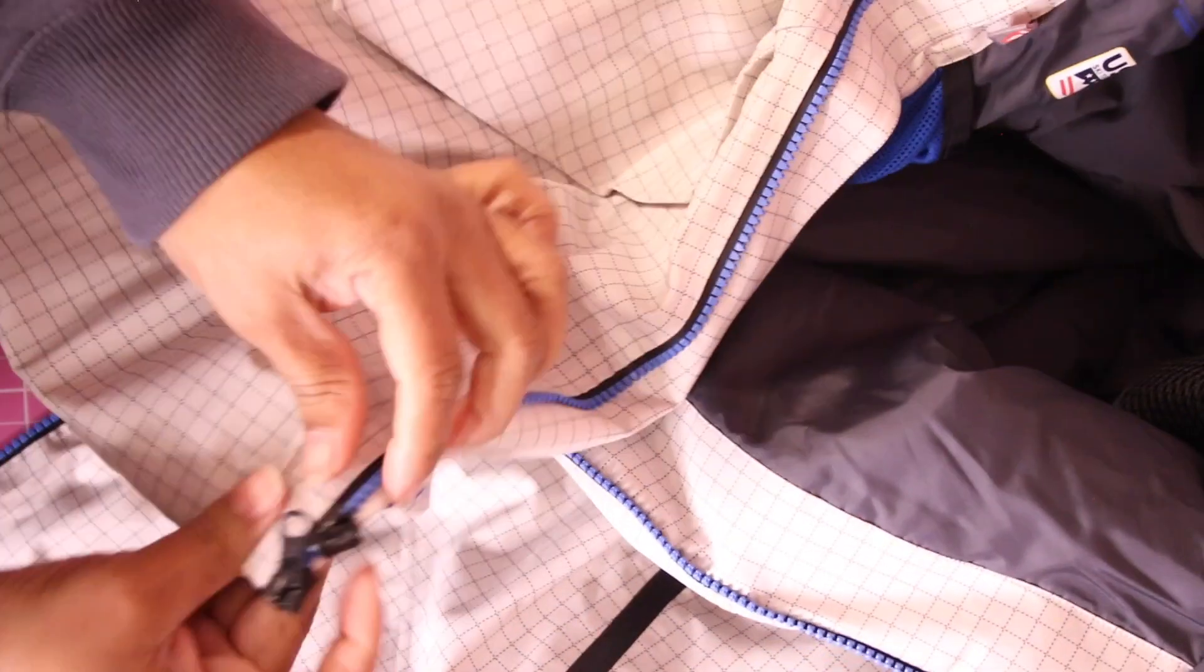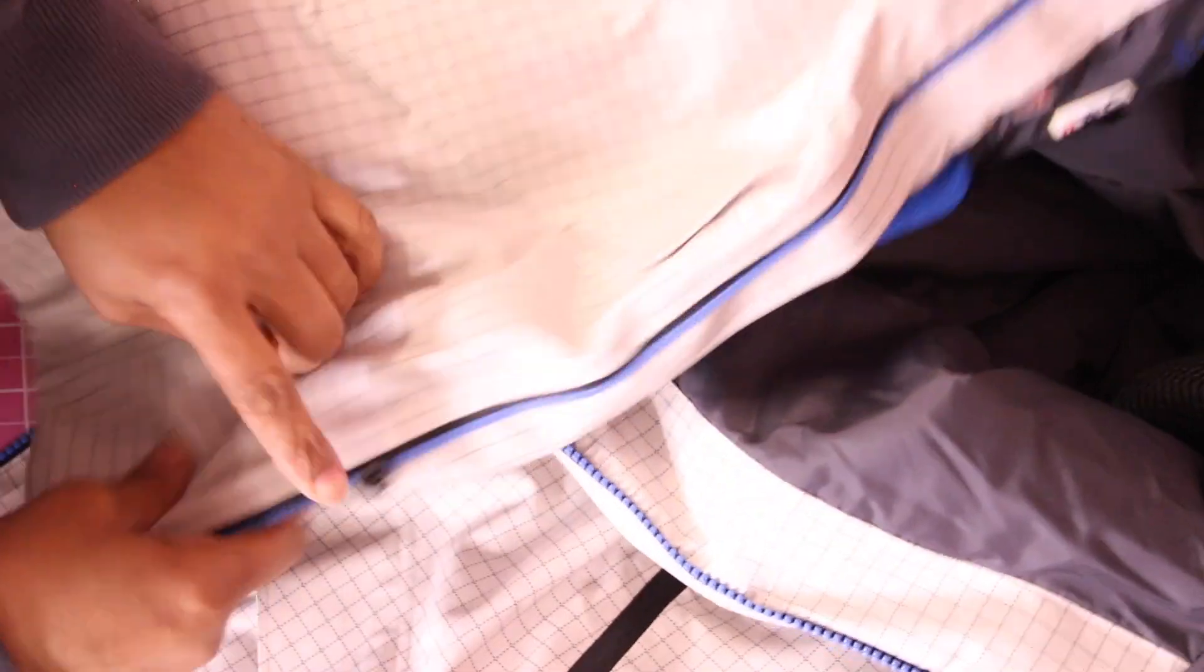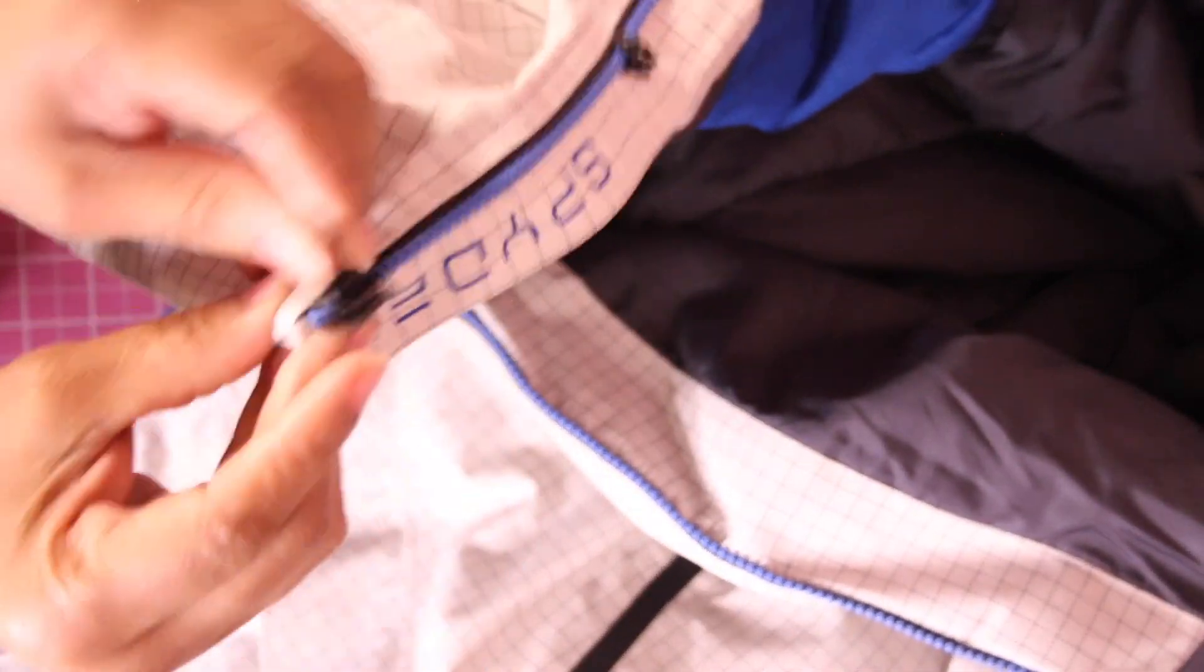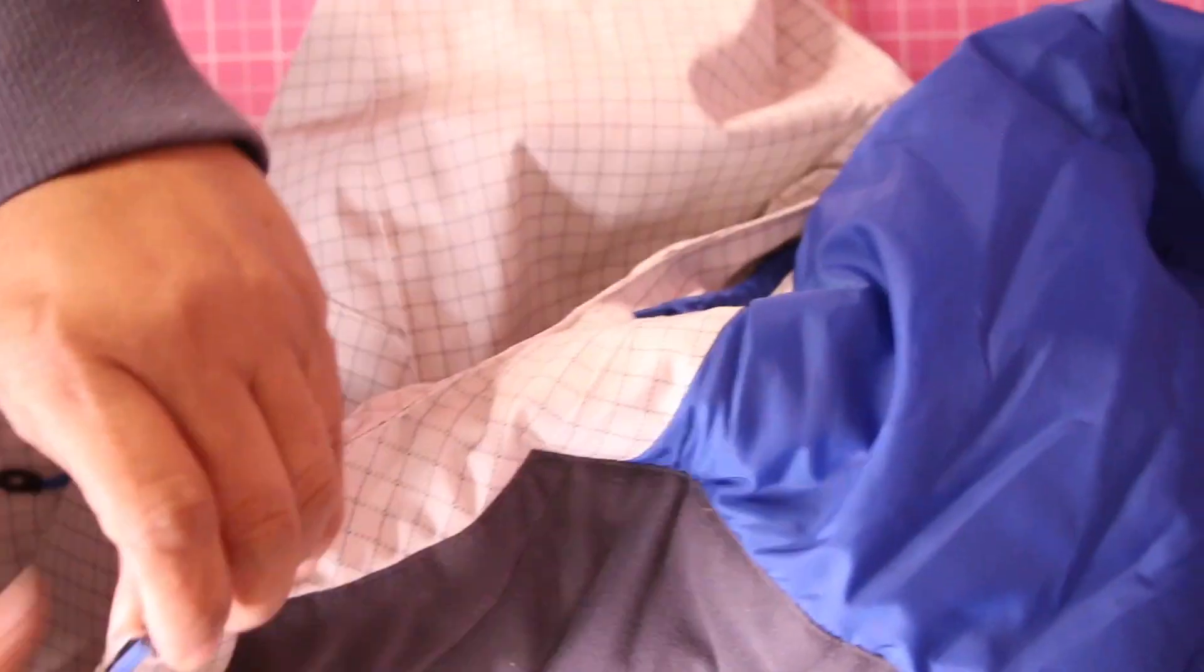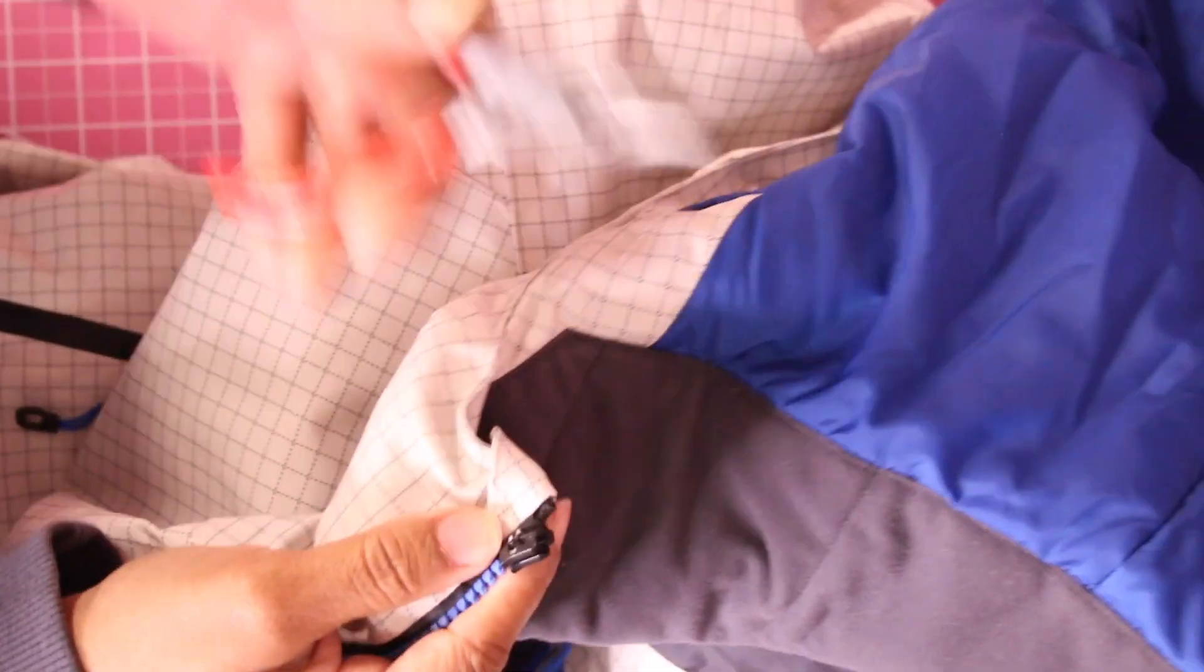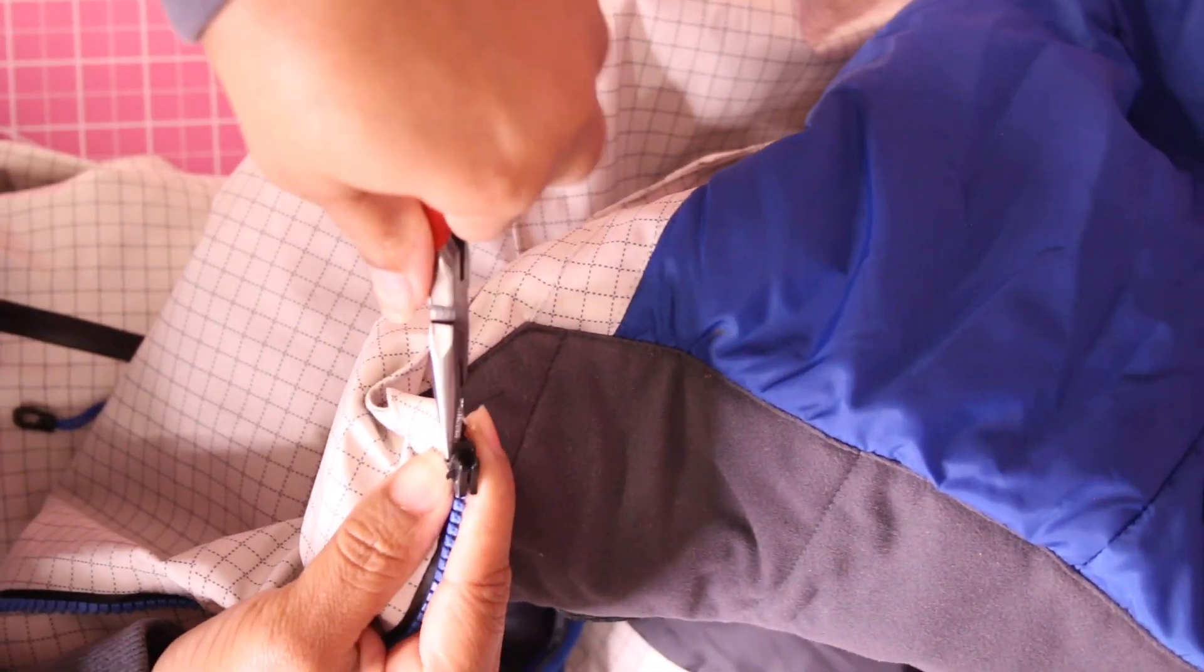Then we're going to take our slider, just the top one. The bottom one is just fine, so we don't need to do anything with that. We're going to take this, pull it all the way to the top. This is not going to come off very easy because there's no pull on here, so we're going to take our needle nose and just kind of yank it off the top like that.